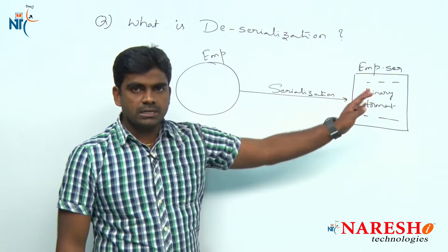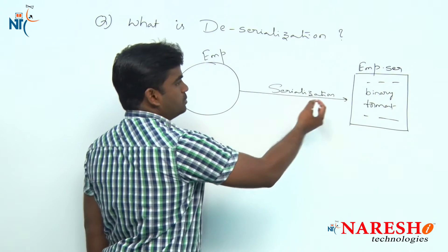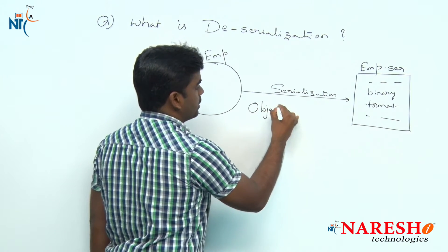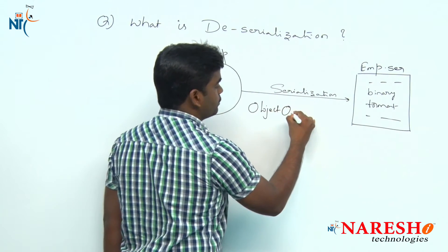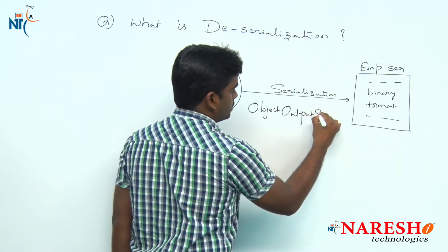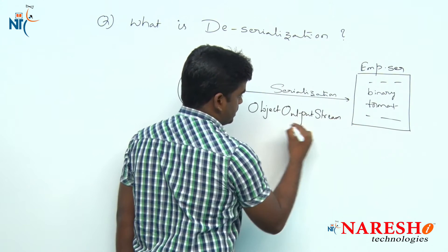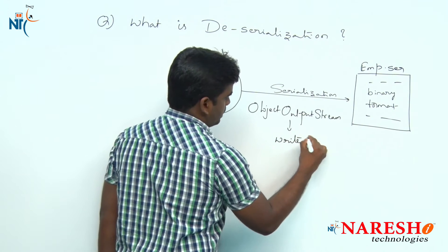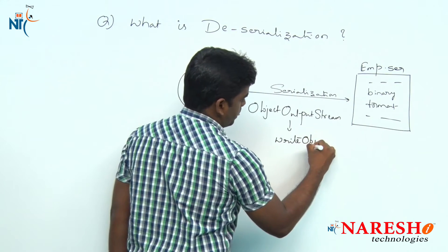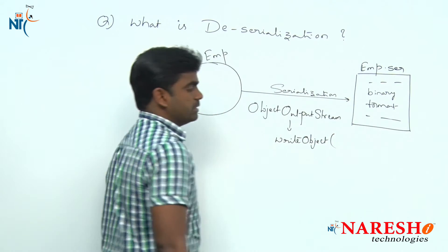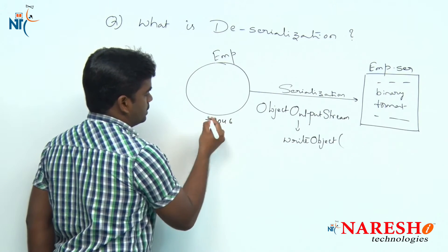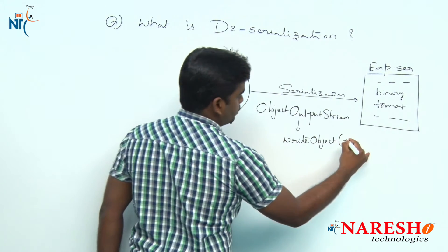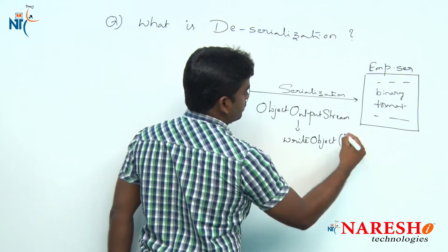How to perform serialization? Using the ObjectOutputStream class, because we are writing the information. In this class, there is a writeObject method. Using the writeObject method, you can convert — suppose object is a reference variable — if you pass it, that will be converted.